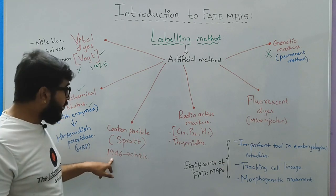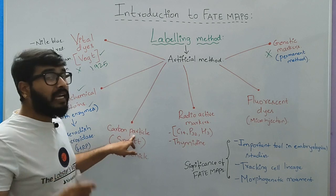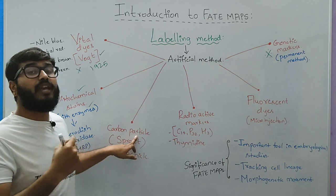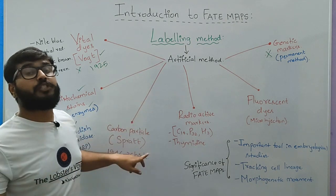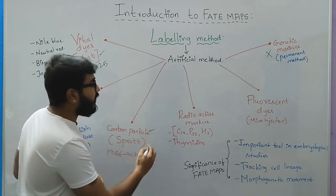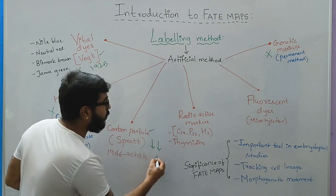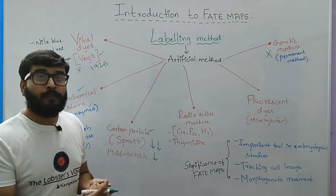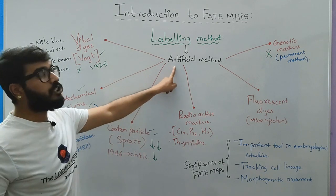The third major technique is the use of carbon particles, done for the first time by a scientist known as Pratt in the year 1946. He conducted experiments on the chick embryo where carbon particles such as C13 were induced into the egg and he tracked the fate maps of the chick. Again, it is an important technique; however, the concentration of the carbon particles gradually reduces as the chick embryo divides and the process of dermal layer formation initiates.